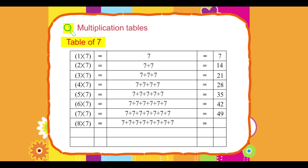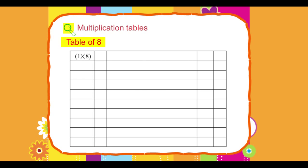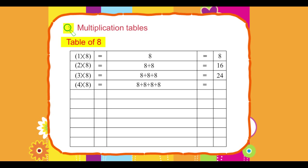9 into 7 equals 63, 10 into 7 equals 70. Table of 8. 1 into 8 equals 8, 2 into 8 equals 16, 3 into 8 equals 24, 4 into 8 equals 32, 5 into 8 equals 40.